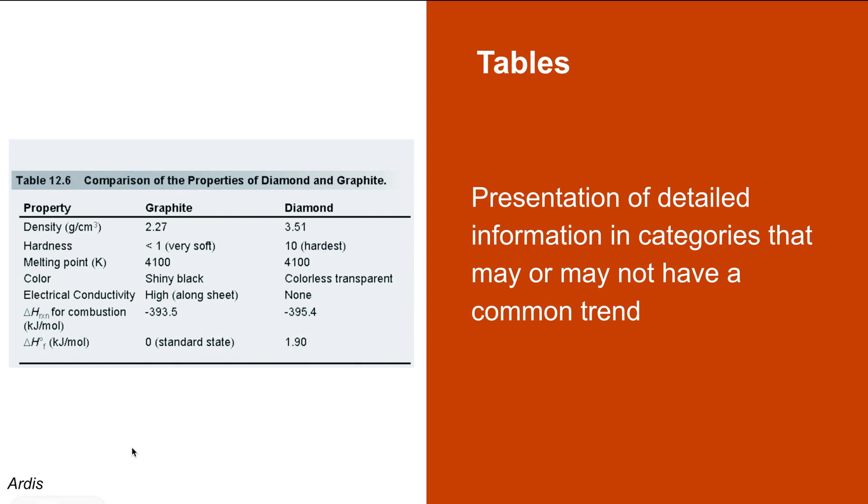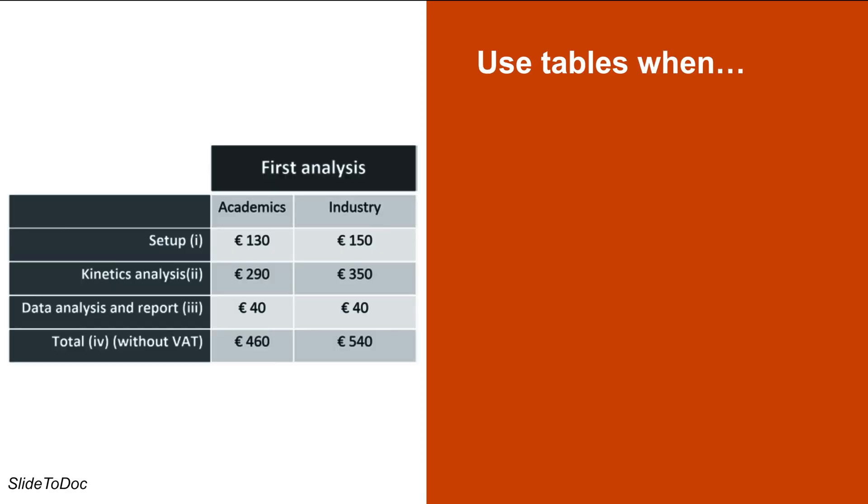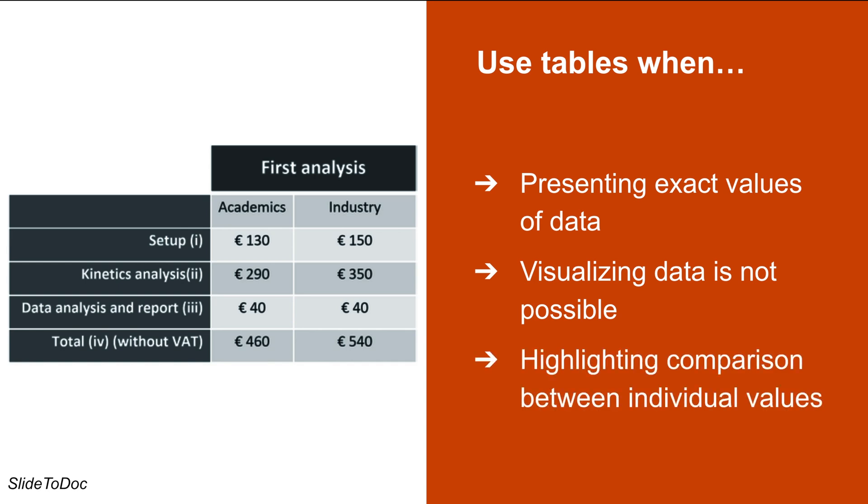For example, if you're comparing the properties of two materials, you can use a table to do so. Tables in engineering documents are used when presenting the exact values of data is important, visualizing data in the form of a graph or chart is not possible, or two or more variables are being compared and it is essential to show how individual values compare with each other.